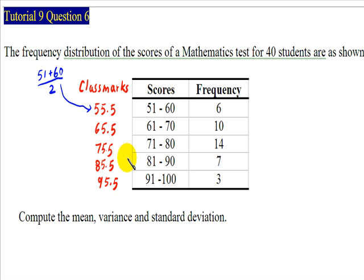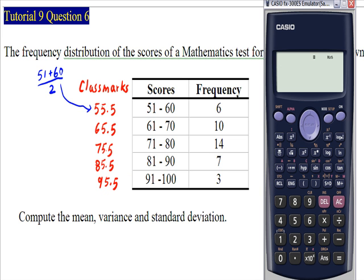Once we have finished computing the class marks, we are ready to set up the calculator to do the statistical calculation. Let me turn on my calculator. To set up the calculator for statistical calculation, we need to press shift, set up. Then you go down and look for statistics. Press 3 for statistics. Then we are going to turn on the frequency distribution table. Press 1. We have set up the calculator correctly.